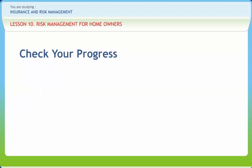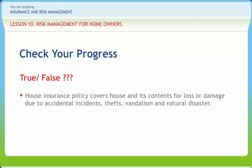Let us check if we have understood the various concepts discussed in this lesson. House insurance policy covers house and its contents for loss or damage due to accidental incidents, thefts, vandalism, and natural disaster. Right or wrong? Right.